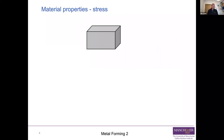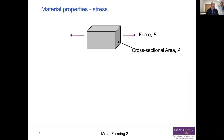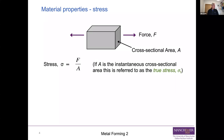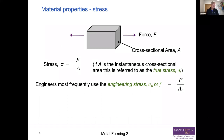Let's start with material properties. We have a rectangular cuboid made of metal with a cross-sectional area A on its ends. We put a load — a force F — on it. Once we apply that force, we need to convert it into something that is area-independent, so we define stress. Stress σ is the force over the area. If we use the instantaneous cross-sectional area, we call this the true stress.